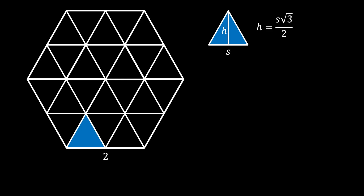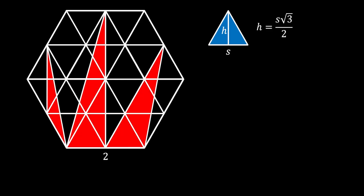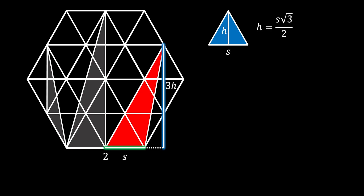But first, let's reintroduce our shapes. Let's start with shape number 1. As you can see, this is a triangle, and you can notice that the base of this triangle is actually the base of our equilateral triangle, so we can label it as s. The height of this triangle is actually equal to three times the height of one small equilateral triangle. So now we can easily calculate the area of this triangle as base times height over 2, which in our case will be s times 3h over 2.